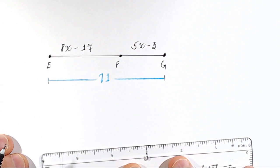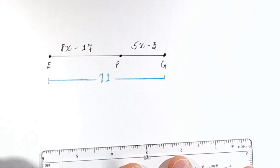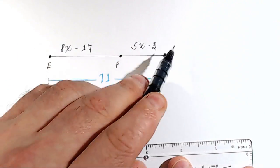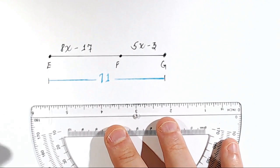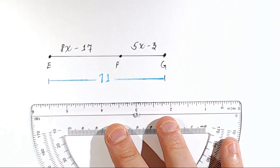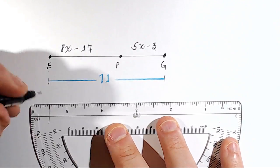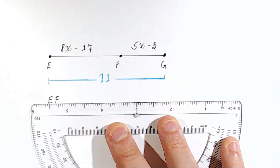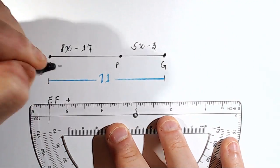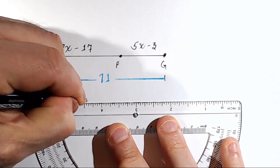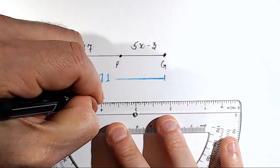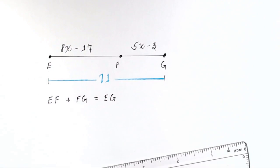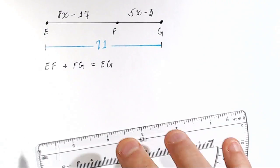So how do we do that? Think about it. If you had numbers here, you would just add them together and get 71. But we don't have numbers — we have algebraic expressions, so we have to set up a little algebra problem. Here's how you do it. In geometry language: the distance from E to F plus the distance from F to G equals the distance from E all the way to G.